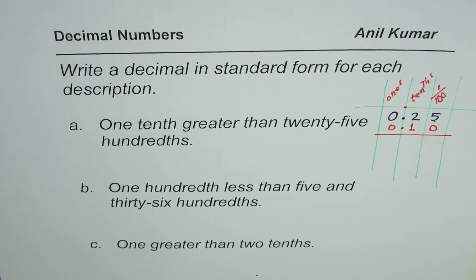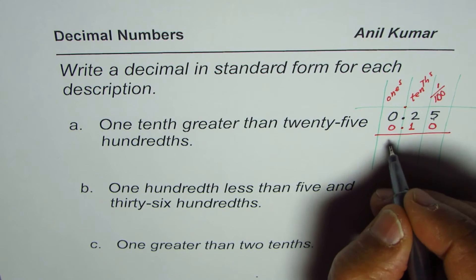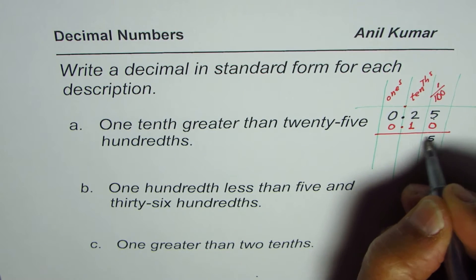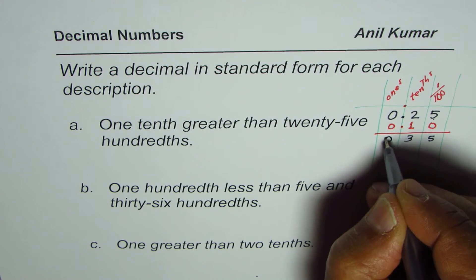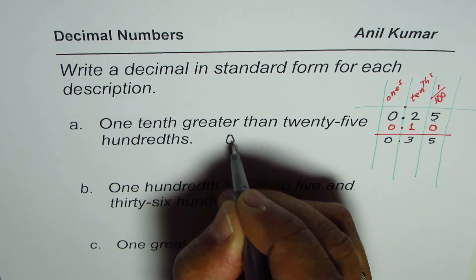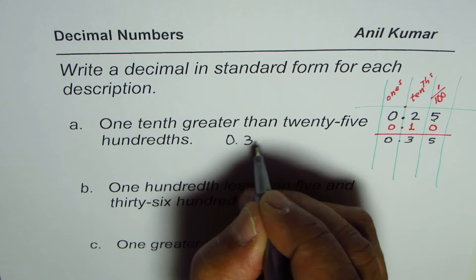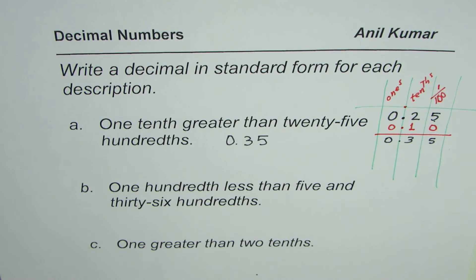So when you add this, what do you get? You get five, three, zero. So the answer is 0.35. That is in standard form.